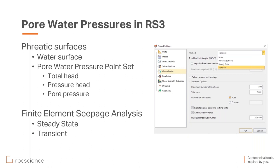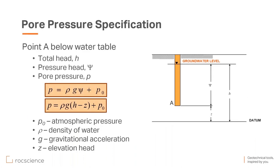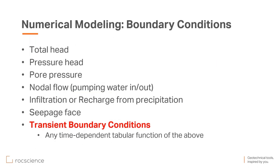We will be talking about the finite element seepage analysis here, the more complex method. For groundwater analysis, the main purpose is to address pore water pressure and total head. If you have a point A at a depth below the water table with a datum for vertical coordinates, your total head is h, your pressure head psi is the depth below the water table, and your pore pressure equals pressure head multiplied by gamma-w. Since this is a boundary value problem, we need to assign boundary conditions. We can assign total head, pressure head, or pore pressure, nodal flow for pumping, infiltration or recharge from precipitation or evaporation, and seepage face.